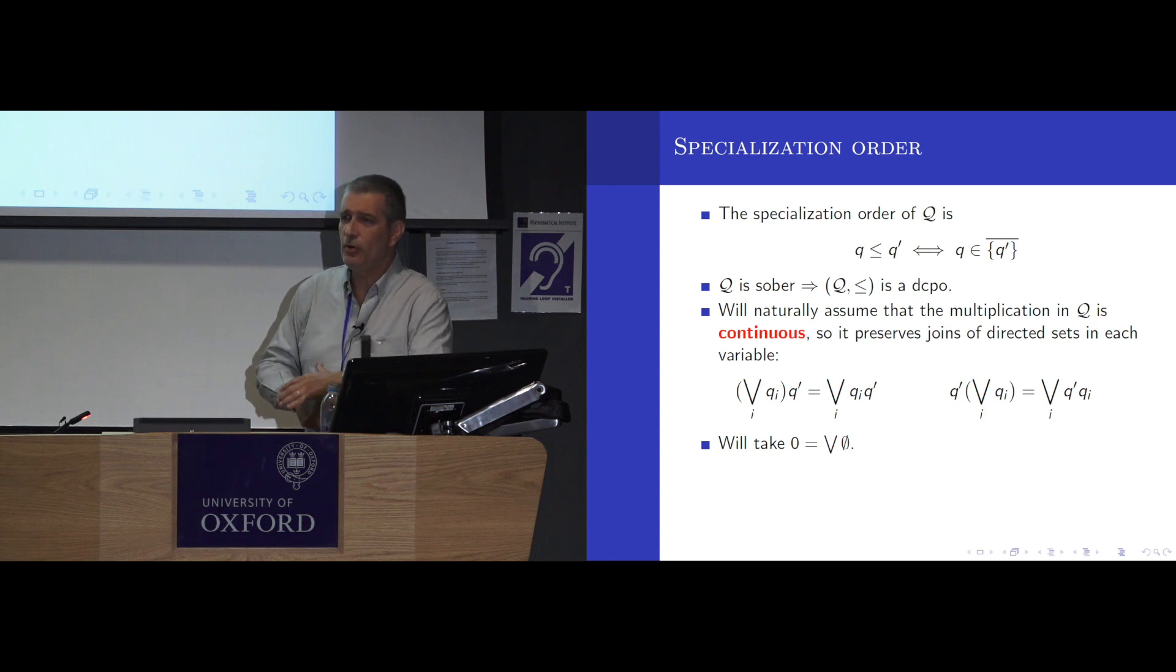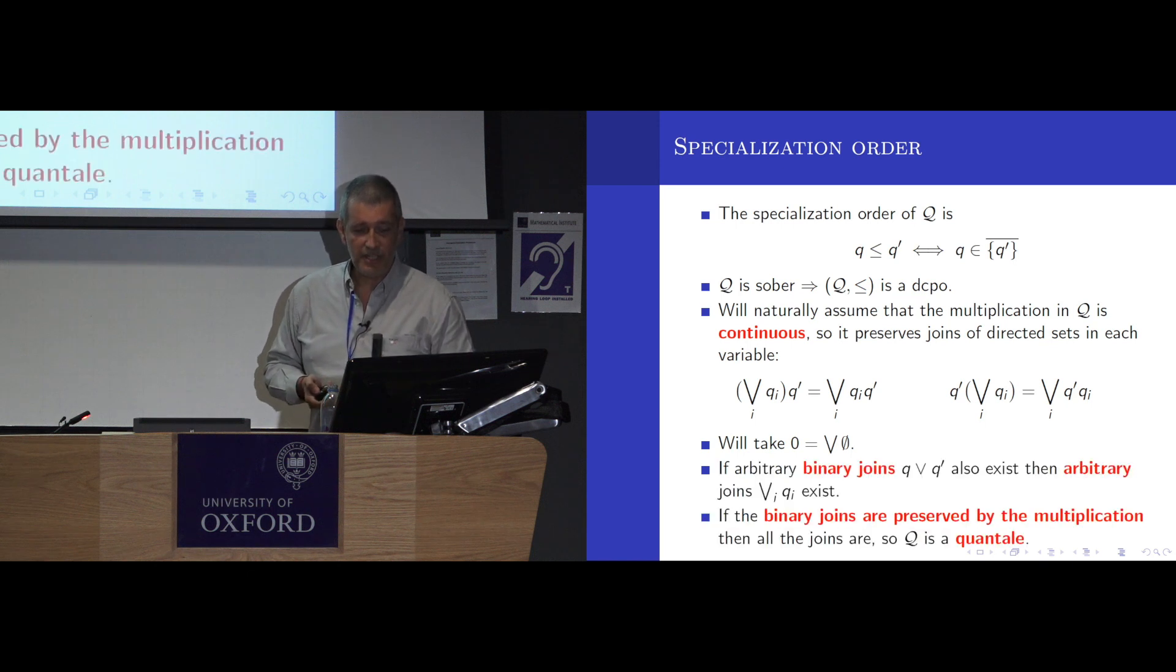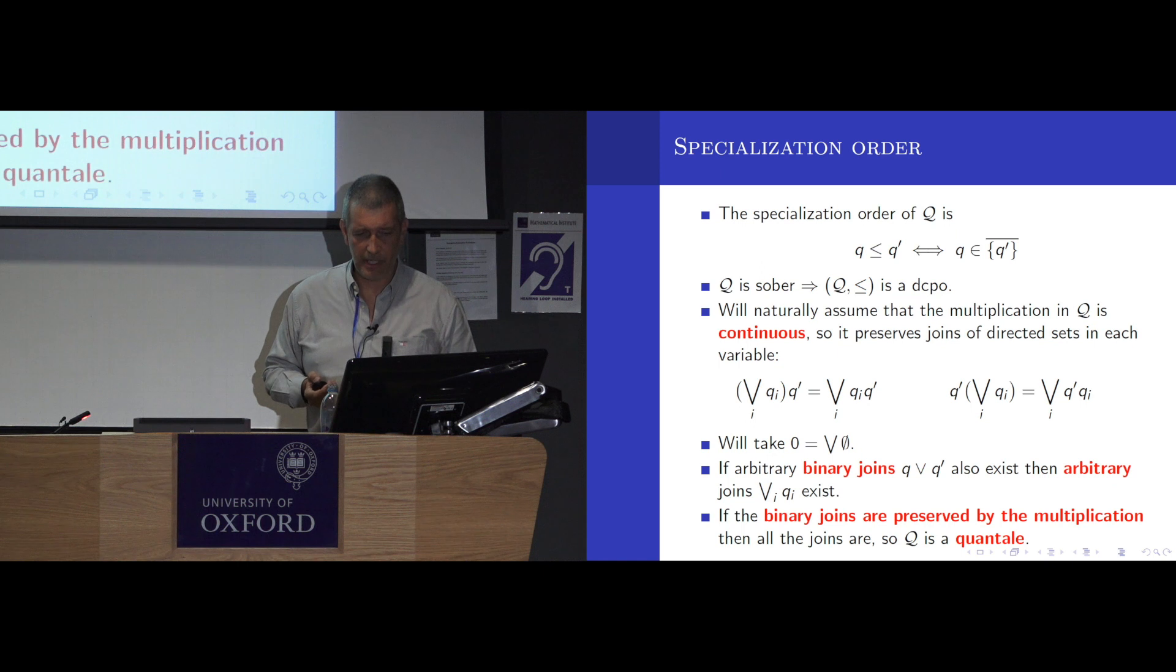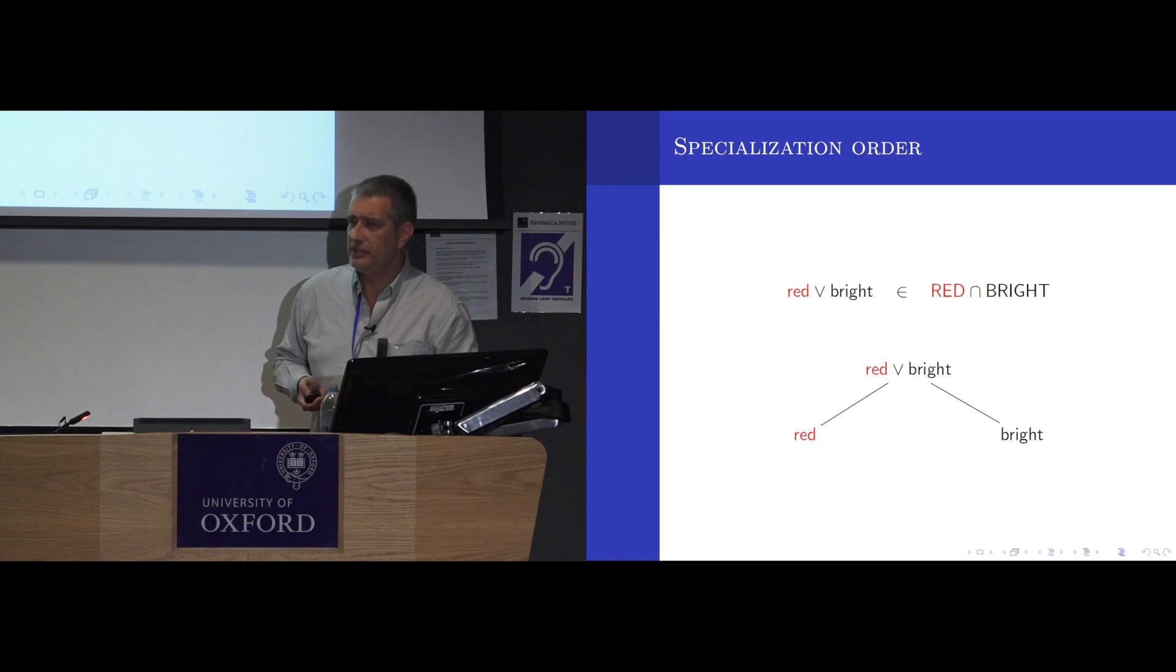So what's missing in order to have all the suprema? That's only the binary joins. If you have those, then you have everything. So if they exist, and if multiplication preserves them, then you get a structure that is called a quantale. The name was motivated because it was supposed to have something with quantum mechanics, but I won't go into that. So it's a complete lattice with a semi-group structure whose multiplication preserves joins in each variable separately.